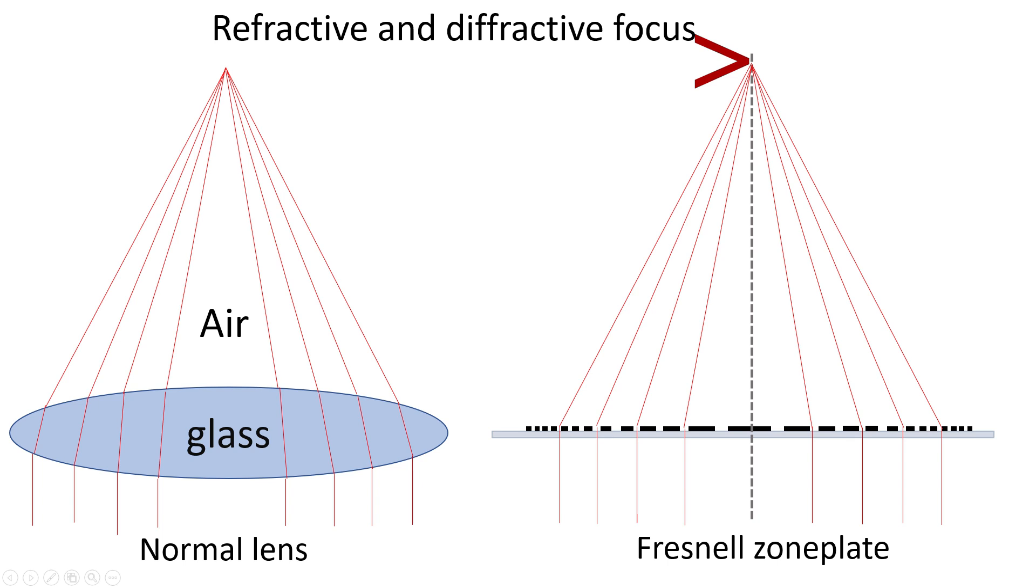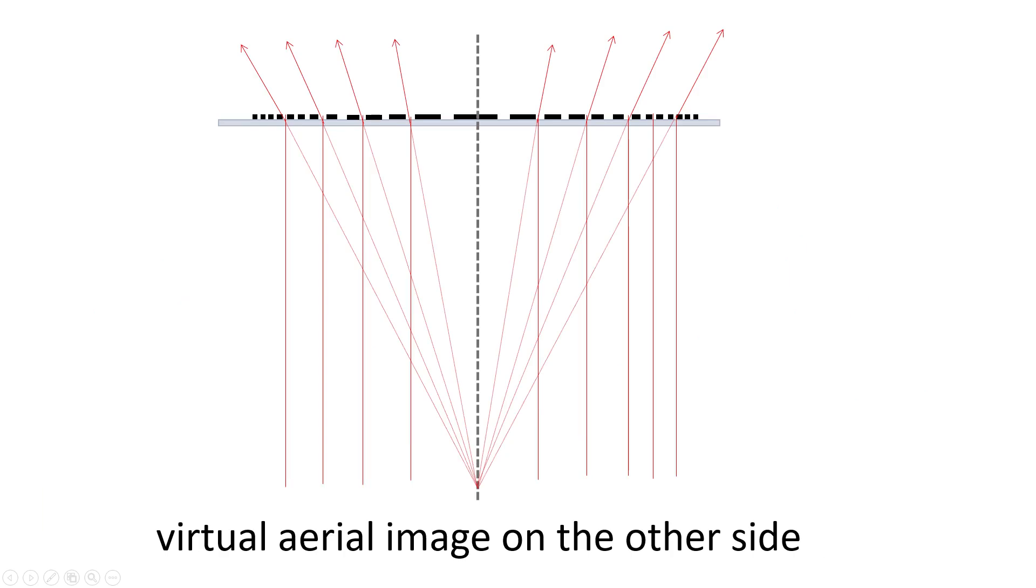Now, I should add that this type of diffractive lenses do not only focus the light towards a specific focal point, but also under the opposite angle. And this means that they also have a virtual aerial image on the other side of the lens. Basically just like a negative lens has.